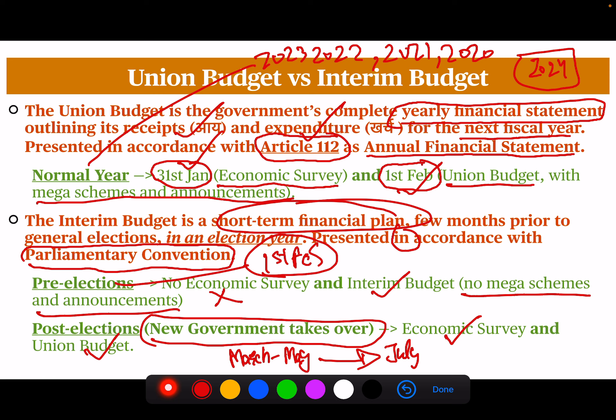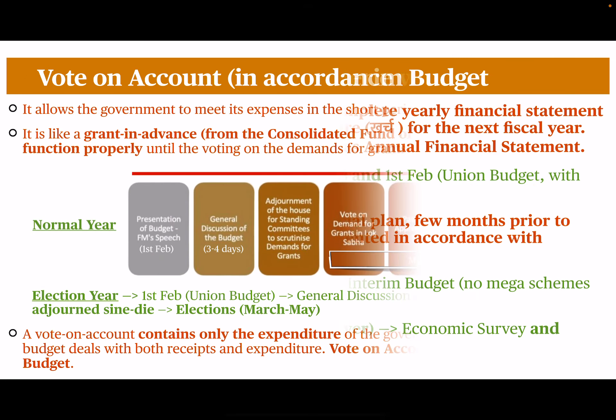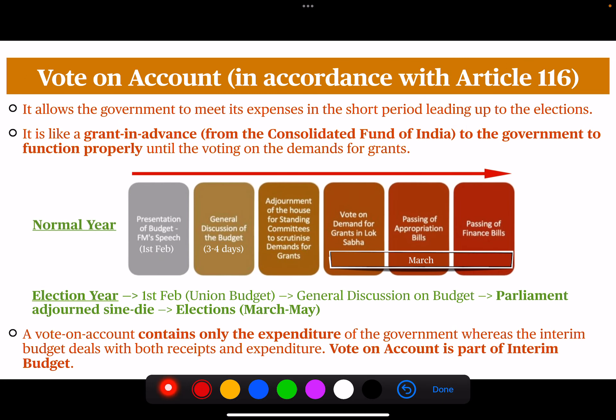The interim budget is interim in nature, and this brings us to the vote on account, which is presented in accordance with Article 116.